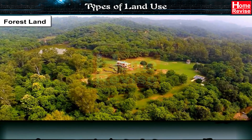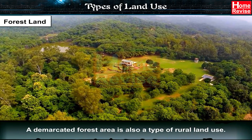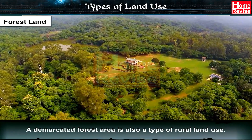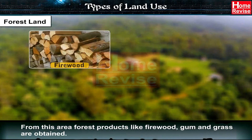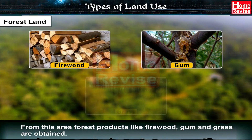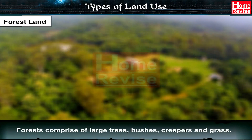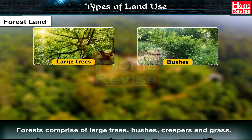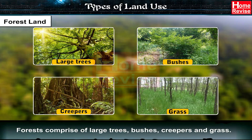Forest Land: A demarcated forest area is also a type of rural land use. From this area, forest products like firewood, gum, and grass are obtained. Forests comprise large trees, bushes, creepers, and grass.